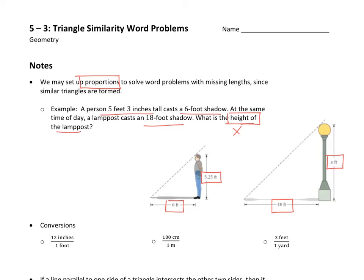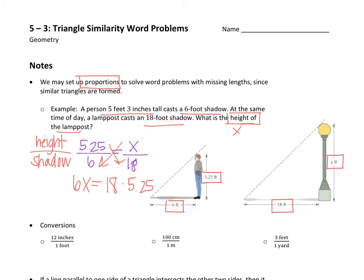Typically we set up a proportion here with something like height over shadow. As long as you're being consistent with the proportion that you set up, it doesn't matter how you do it. So we'll go with the man and then the lamppost. 5.25 over 6 foot shadow equals height X over shadow 18. So here we can just simply cross-multiply. 6X equals 18 times 5.25 and then you solve for X by dividing.